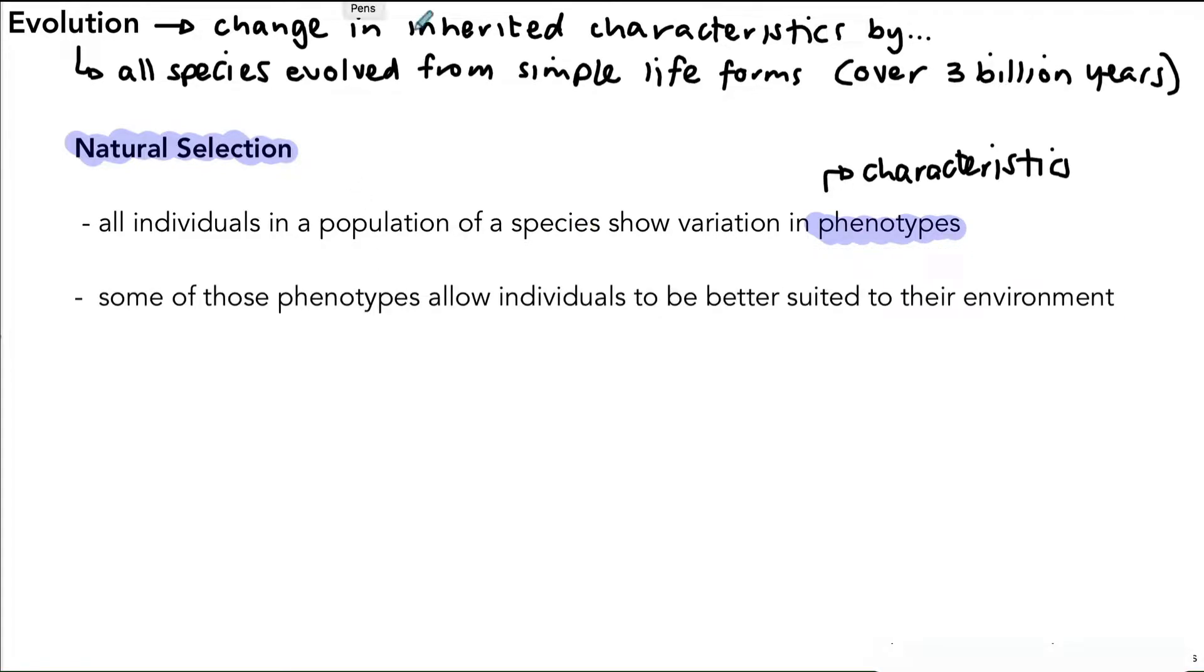Now some of these phenotypes allow individuals to be better suited to their environment. That could mean a whole range of different things, for example they could be faster, they could have better camouflage, they could perhaps be taller. You could list a whole range of different things that give them an advantage or make them better suited for their environment.